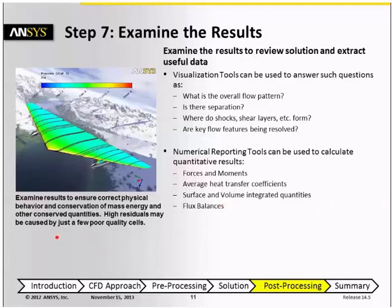Doing simple post-processing like energy and mass balances, and visualizing flow patterns or temperature distributions is an important sanity check in all cases that you run. It can sometimes also be used as a means of establishing whether the solution is correct when the residual plot shows high values. Sometimes high residual values can be caused by a small number of poor quality cells, which would possibly lead us to think the solution is not converged, when in fact it actually is converged.